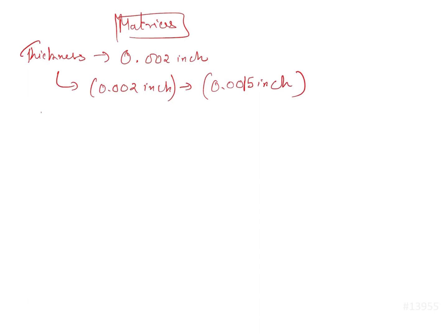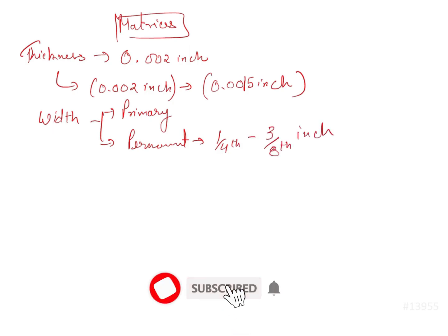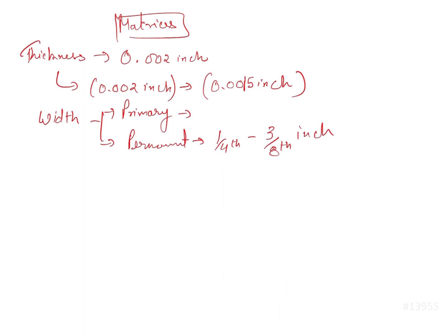The width of the matrix band differs for primary and permanent teeth. For permanent teeth, the width ranges from 1/4 inch to 3/8 inch. For primary teeth, the width ranges from 1/8 inch to 5/16 inch. These are the dimensions commonly asked in exams.